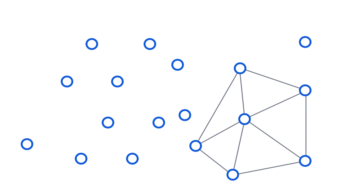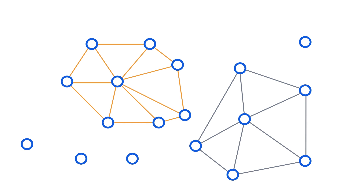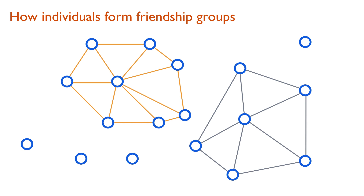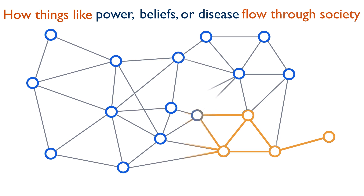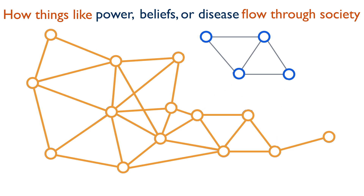We can study what makes a group of strangers start to form distinct friendship groups. And once networks are formed, we can see how things like power, beliefs, or even an outbreak of disease flows through the individual connections.